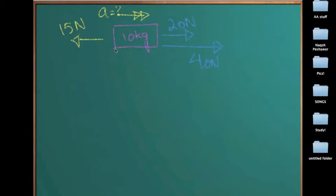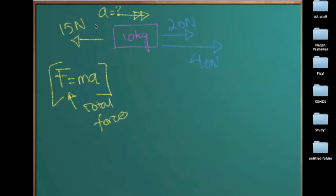We know our formula which says F is equal to MA, where F stands for total force. In this case where we have three forces, first of all we will find out the resultant of three forces. And as we know, we always make an arbitrary axis.